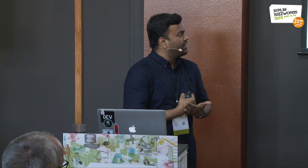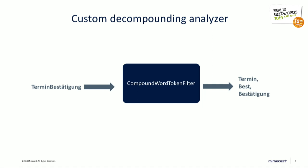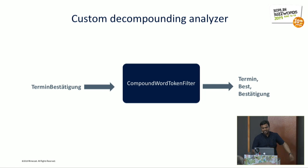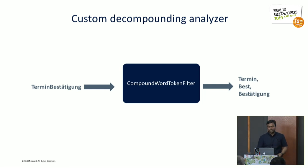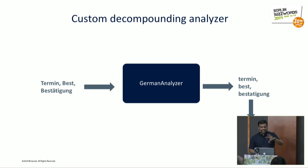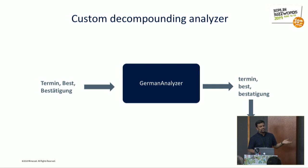Let's take an example from our real data. Say a user has an email with 'Terminbestätigung', which means 'appointment confirmation', and we want to store it with our analyzer. Using hyphenation grammar, it breaks down the word into 'Termin', 'Best', and 'Bestätigung'. 'Best' comes out of 'Bestätigung' recursively. So we now have 'Termin' for appointment, 'Best', and 'Bestätigung' for confirmation — the broken-down subwords. These are then passed to the German analyzer, which processes the umlauts and produces lowercase 'Termin', 'Best', and 'Bestätigung', allowing users to also search by just matching subwords like 'Gazette'.